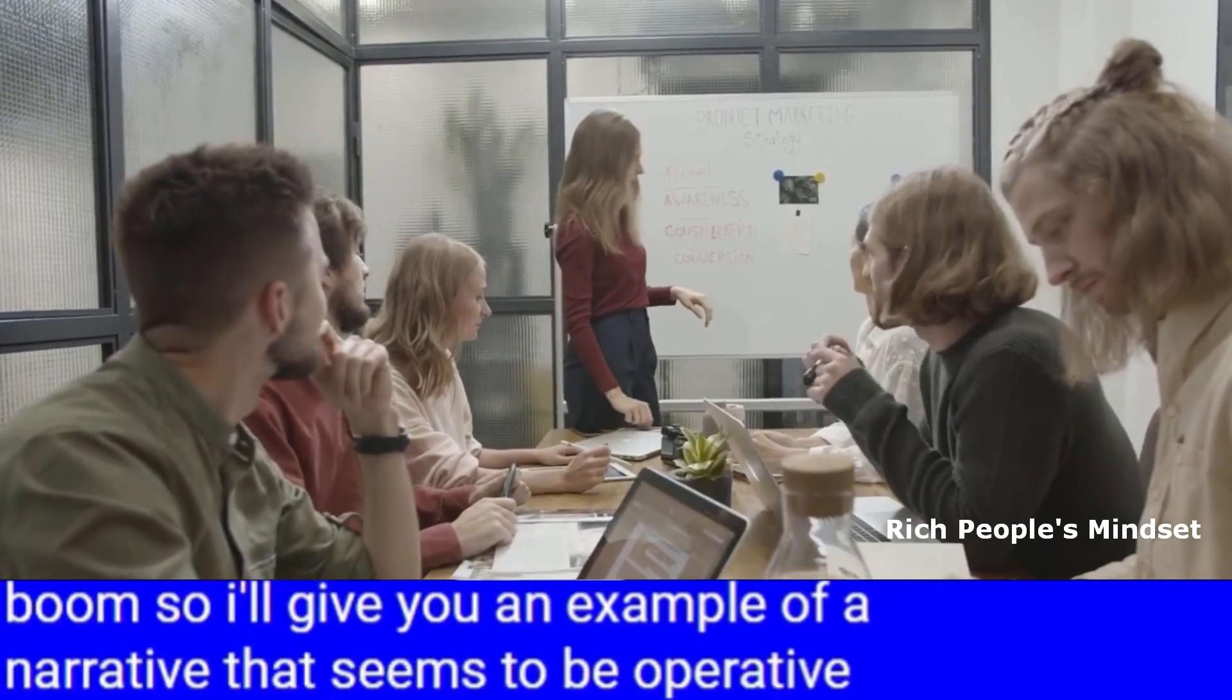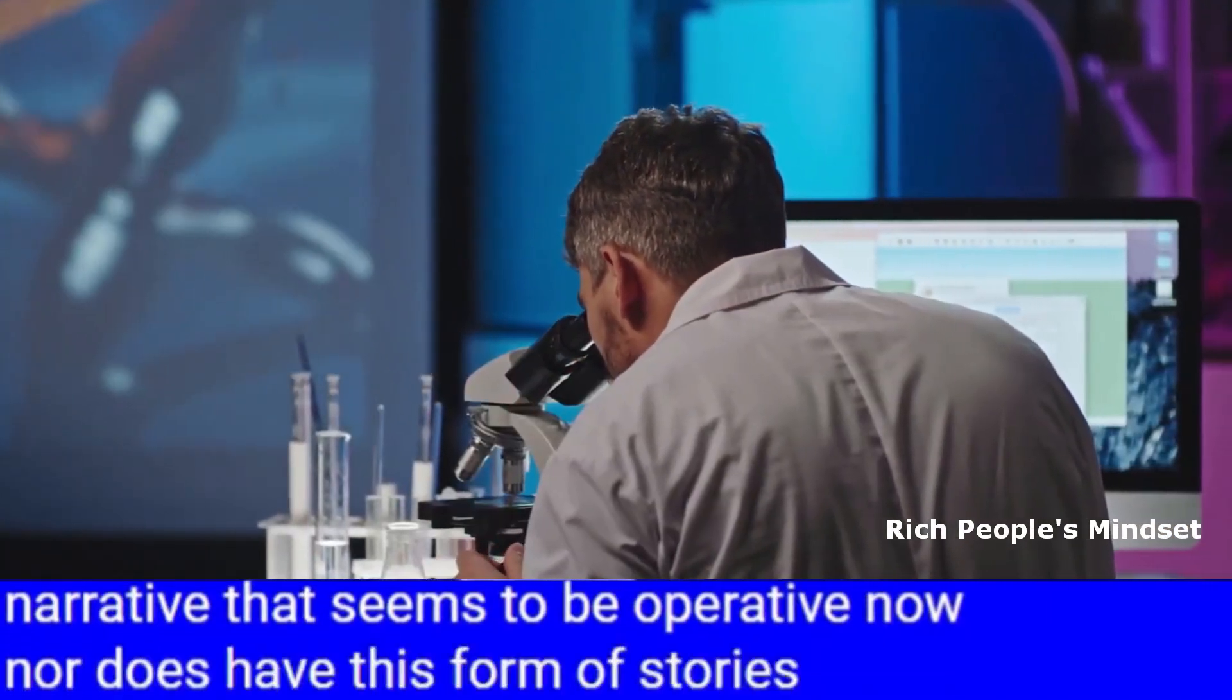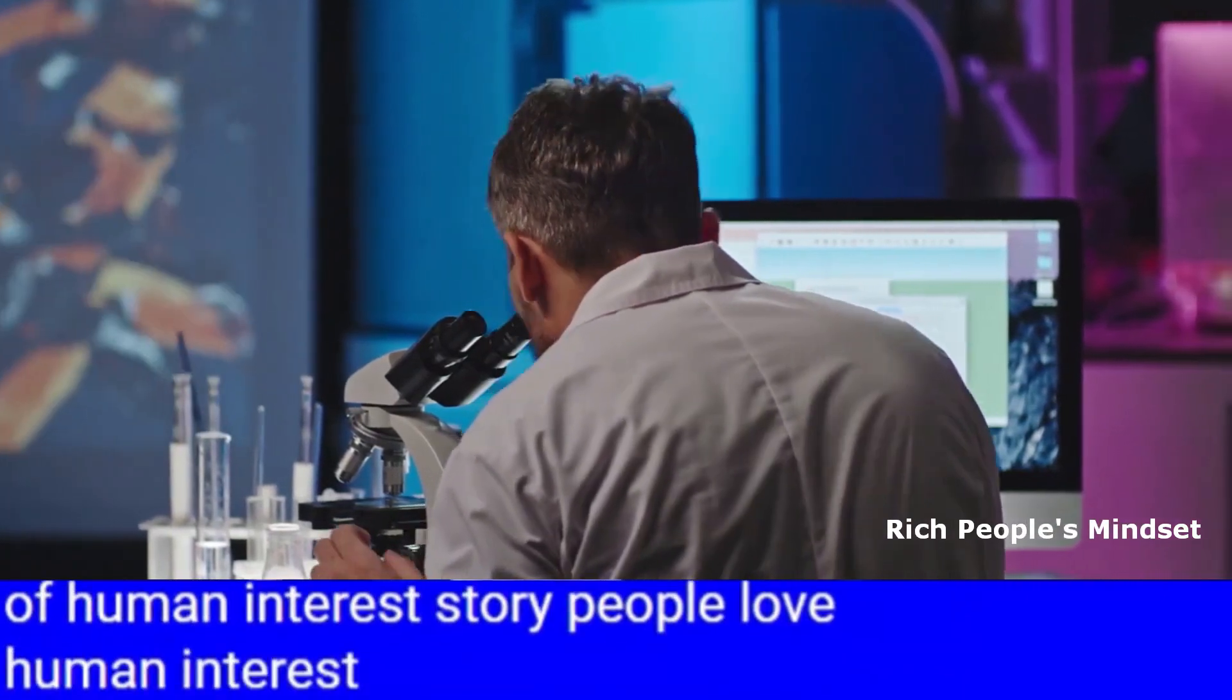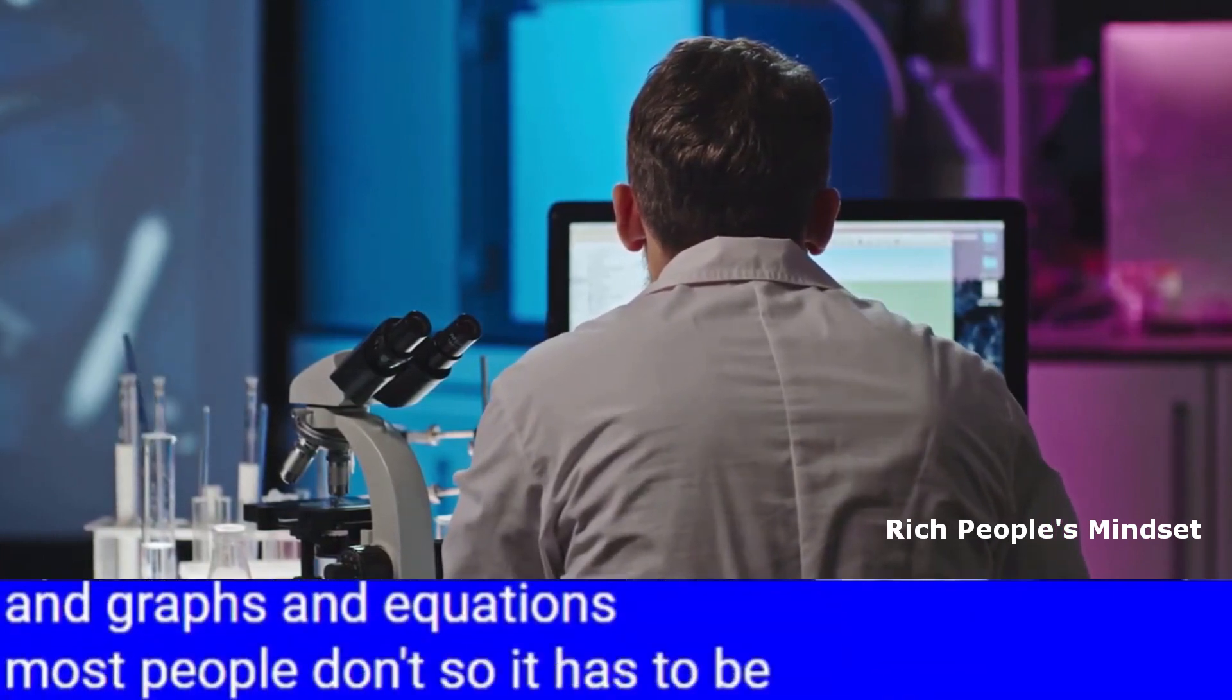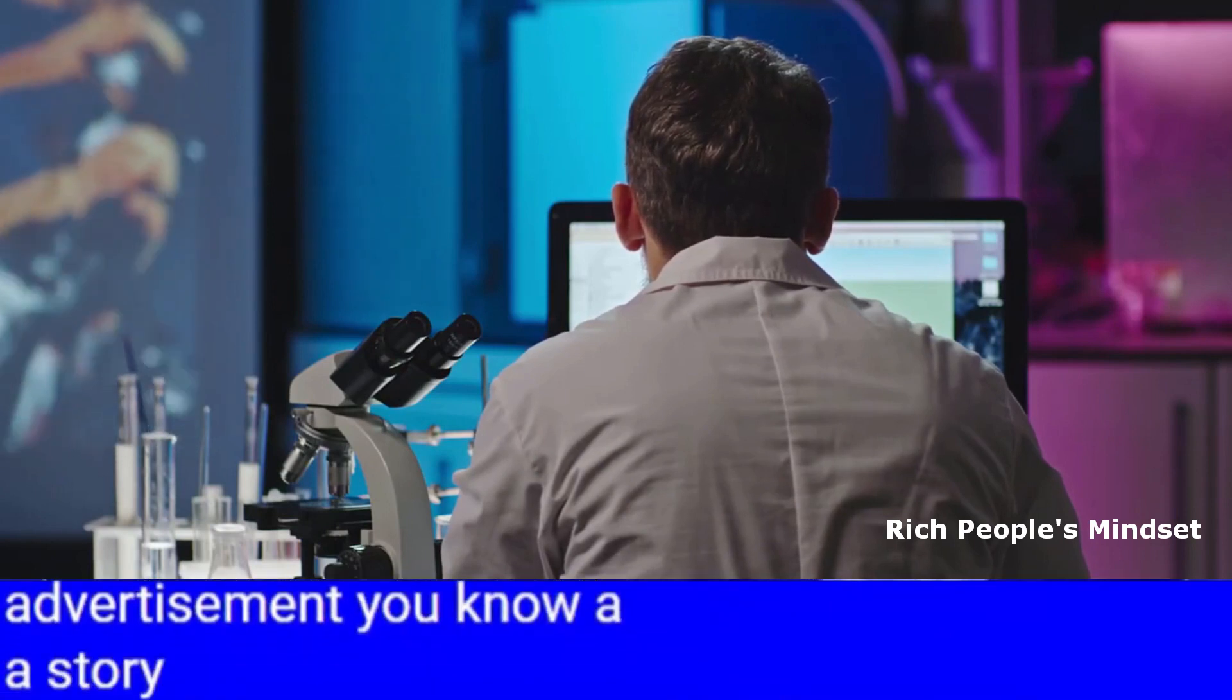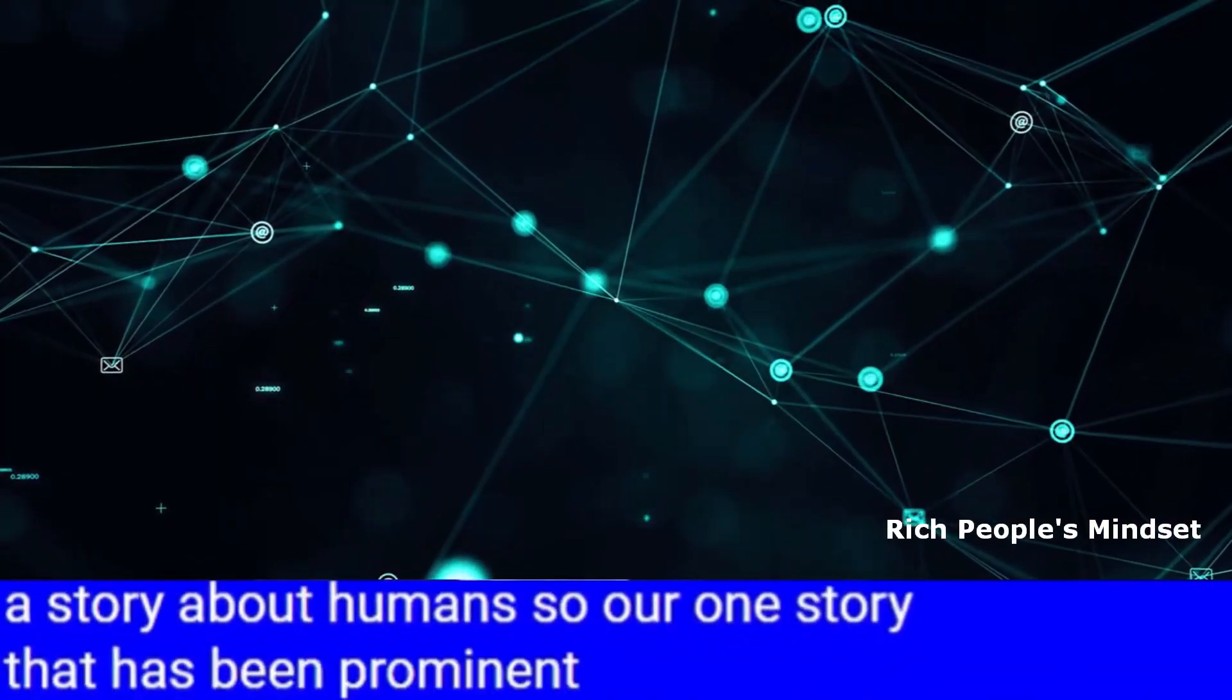So I give you an example of a narrative that seems to be operative now. They have this form of stories, of human interest. People love human interest, right? They don't like to look at charts and graphs and equations. Most people don't. So it has to be presented in a way like an advertisement, a story about humans.